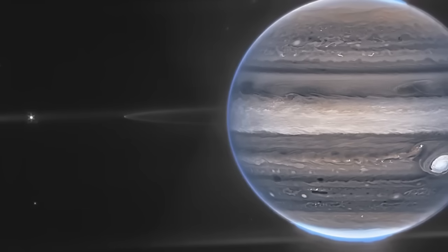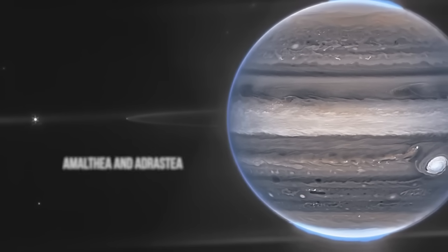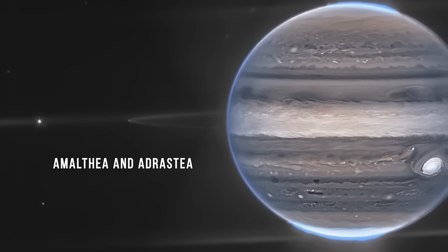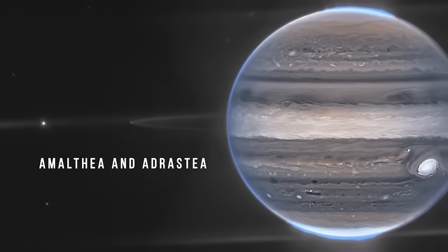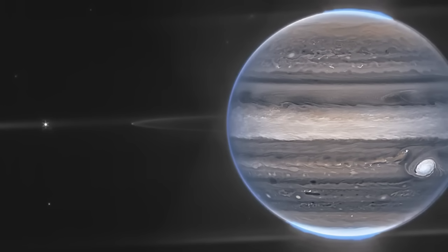You can also see on the image two of the 79 moons of Jupiter, Amalthea and Adrastea. They are very small and very difficult to spot.